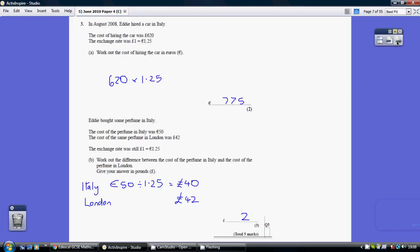Question 3. Now, this is the exchange rate, 1 to 1.25. So we're either going to be multiplying by that or dividing by that.